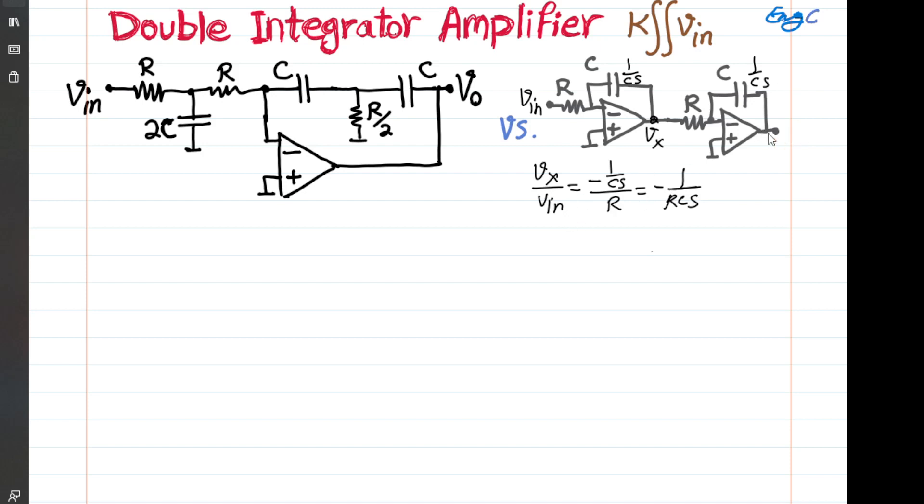And if you do the same thing from Vx midpoint to Vout, you will get the same outcome. So for this circuit, basically you are saying Vout over Vx is also negative 1 over RCS because it's a copy-paste of that circuit. Combining these two results, this result and this result, we can get by just multiplying these two things together.